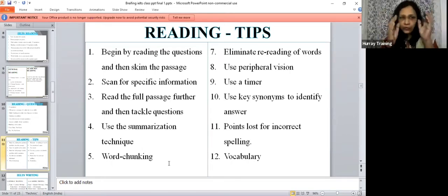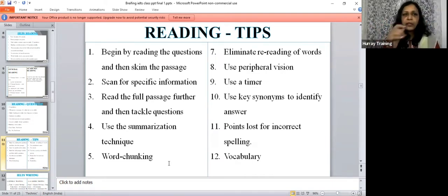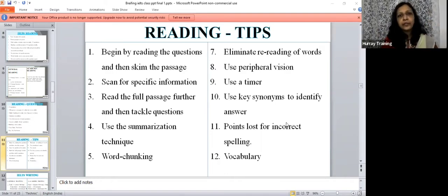Word chunking is another important tip which you can use. So when reading quickly, group the words together. Chunking means grouping. So you group the words while you're reading so that you don't read one word after another words one by one. You just read them in groups so that you absorb and comprehend the meaning faster. Then eliminate rereading of words. Don't reread. Don't go back and read that sentence again because that will bring down your speed. You have to be very good in your vocabulary and your synonyms.